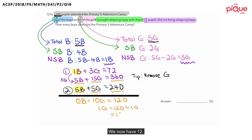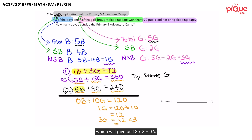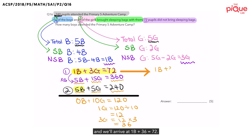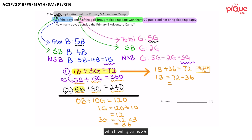We now have 1G equals 12. We only have G — we do not have B. We can substitute what we have found for G into equation 1 to solve for B. First, we find 3G: 12 times 3 equals 36. Using equation 1, substituting the known numbers, we arrive at 1B plus 36 equals 72. If you are unable to see how to derive 1B, simply draw a simple model. So 1B equals 72 minus 36, which gives us 36.